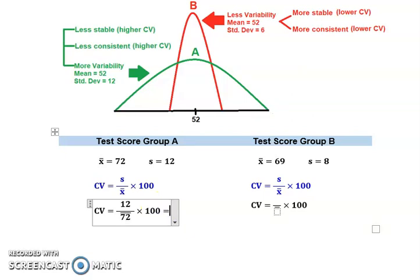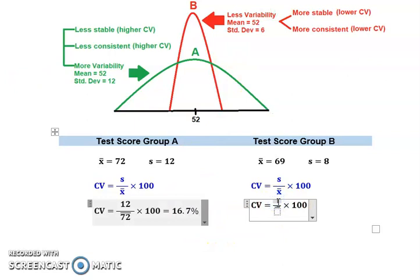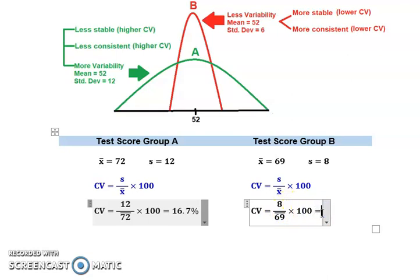The CV for Group A is 16.7%. Now let's calculate CV for Group B: standard deviation 8 divided by mean 69, multiplied by 100. The CV for Group B equals 11.6%.